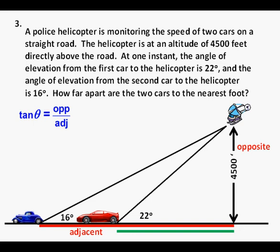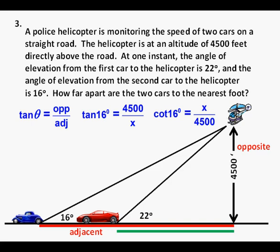For the red line segment length we can set up the relation tangent of 16 degrees equals 4,500 divided by x. However, we can make the equation easier to solve by using the reciprocal ratio cotangent, which is adjacent over opposite, to become cotangent of 16 degrees equals x over 4,500 feet. Multiplying both sides by 4,500 feet, we get that x equals 4,500 times cotangent of 16 degrees. Similarly for the green line segment, y equals 4,500 times cotangent of 22 degrees.